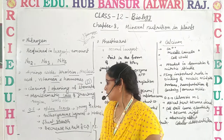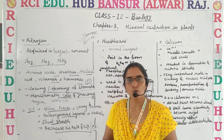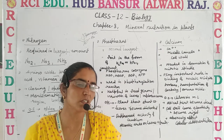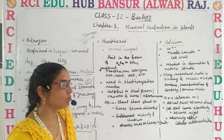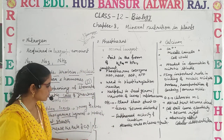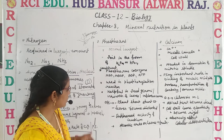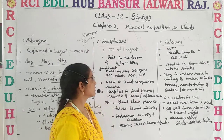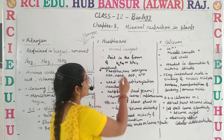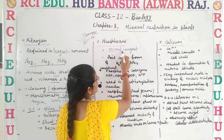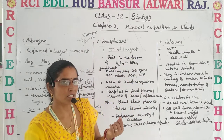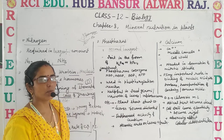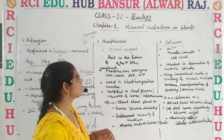Due to the deficiency of nitrogen, the rate of cell elongation and protein synthesis also decreases. So that is all about nitrogen. Now let's go ahead and discuss phosphorus. It is the second largest element required by the plants — nitrogen being the first largest — and phosphorus is the second.